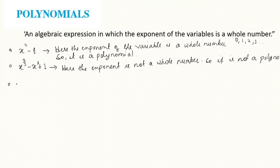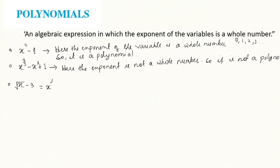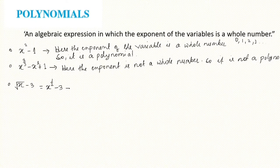Next example: square root of x minus 3. Square root of x means x raised to the power 1/2. So x to the power 1/2 minus 3 — the exponent 1/2 is a fraction, not a whole number. Therefore, this is not a polynomial.